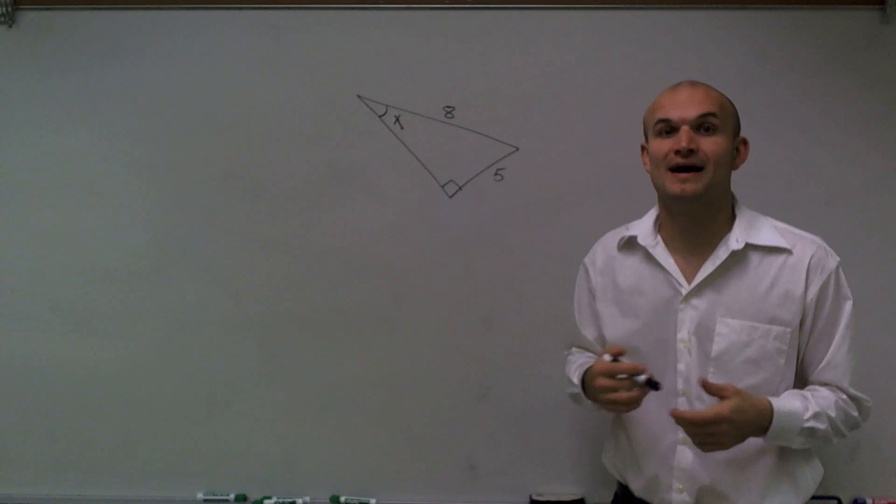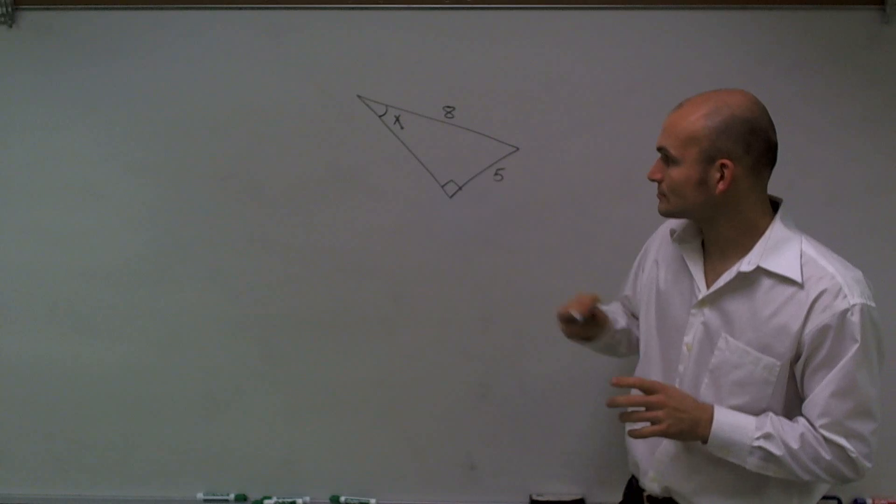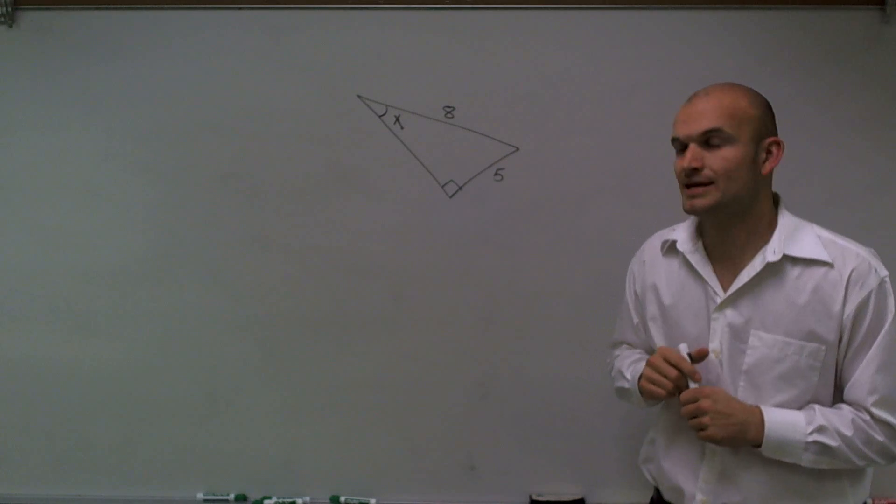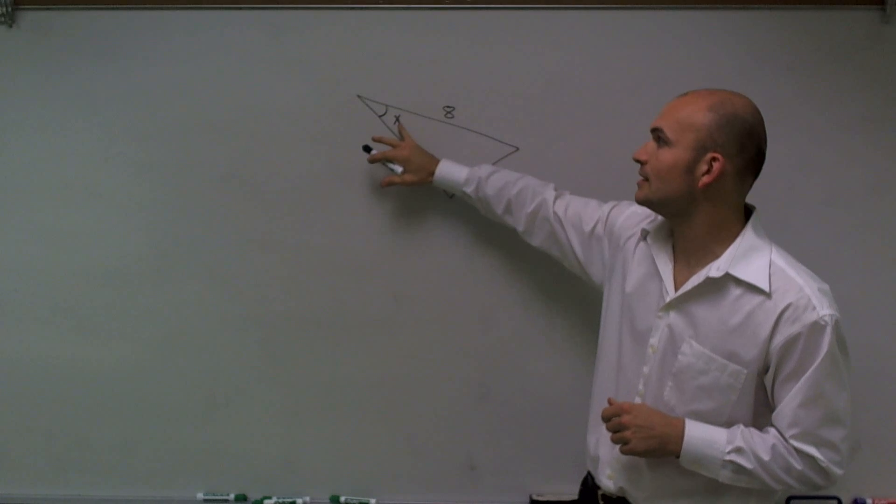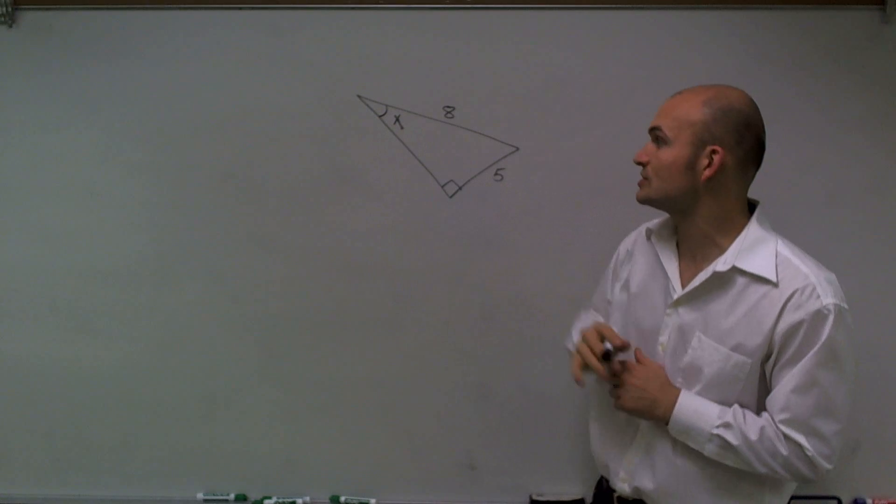Welcome. What I want to do today is show you how to find the missing measurement of our indicated angle. We have a triangle with a missing angle measurement here, which is x.